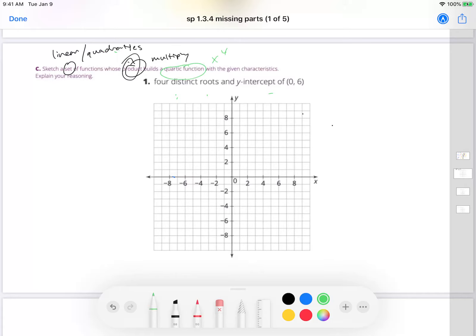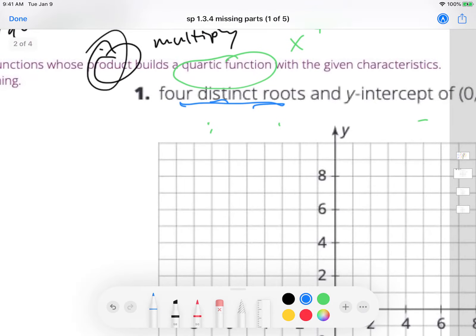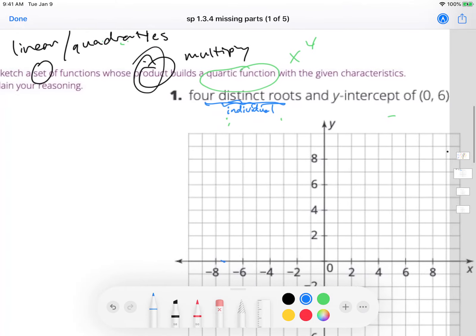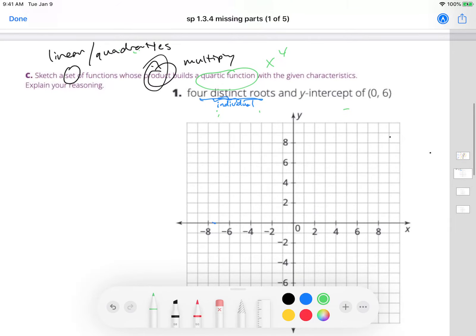Four distinct roots - another word for distinct is like individual points or individual. And a y-intercept of (0,6). They're saying the final product has to be 6. So how do you do that? It just basically means whatever functions you build, all the constants, all those numbers at the very end, when they multiply, that'll be a 6.